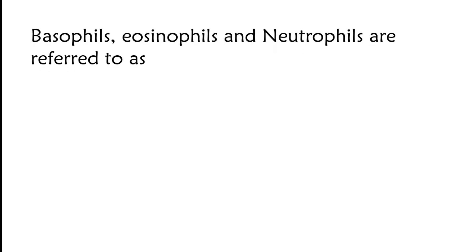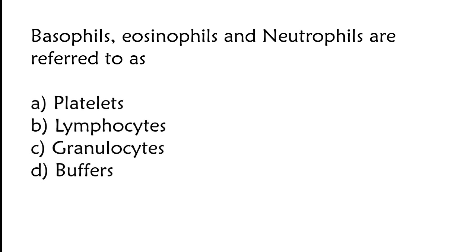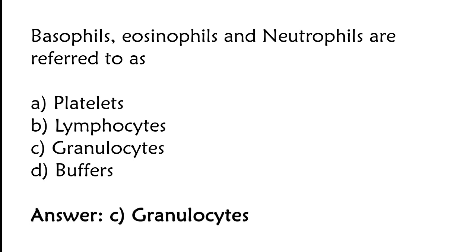B-cells, erythrocytes and neutrophils are referred to as — options: platelets, lymphocytes, granulocytes, B-cells. The correct answer is option C. B-cells, erythrocytes and neutrophils are referred to as granulocytes.